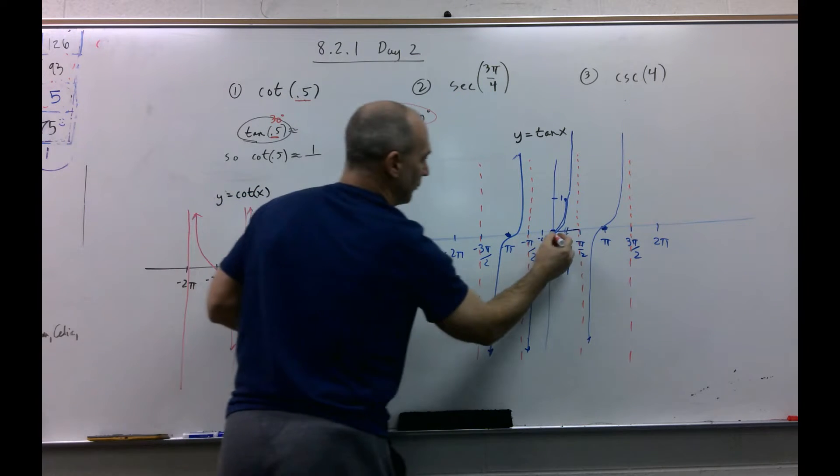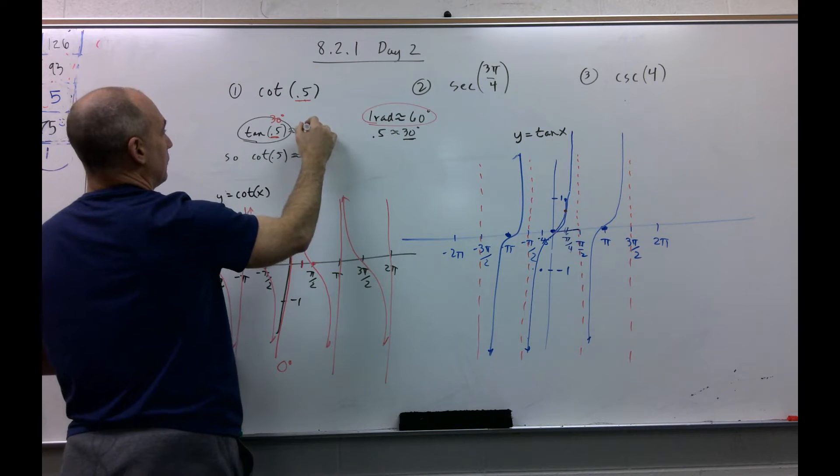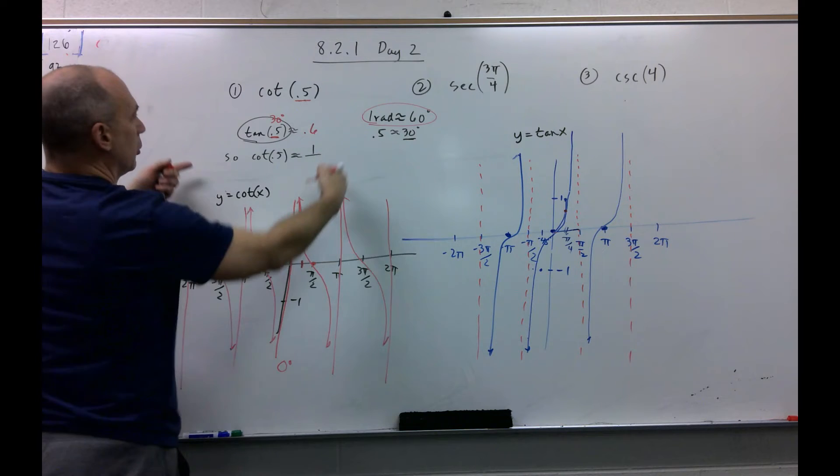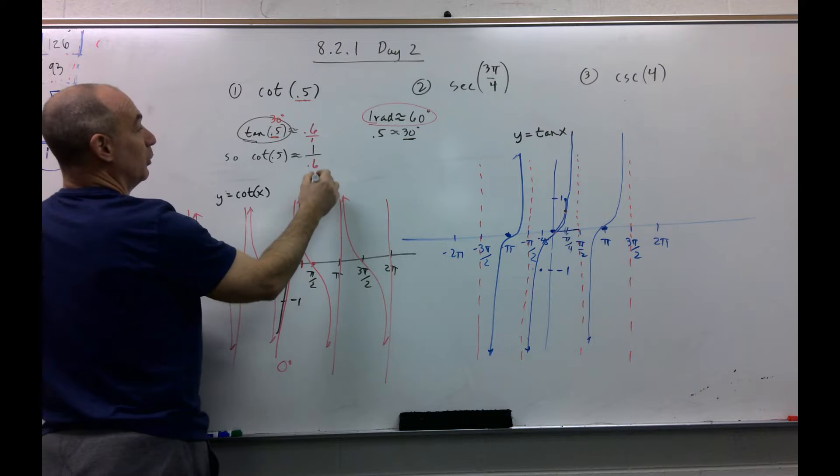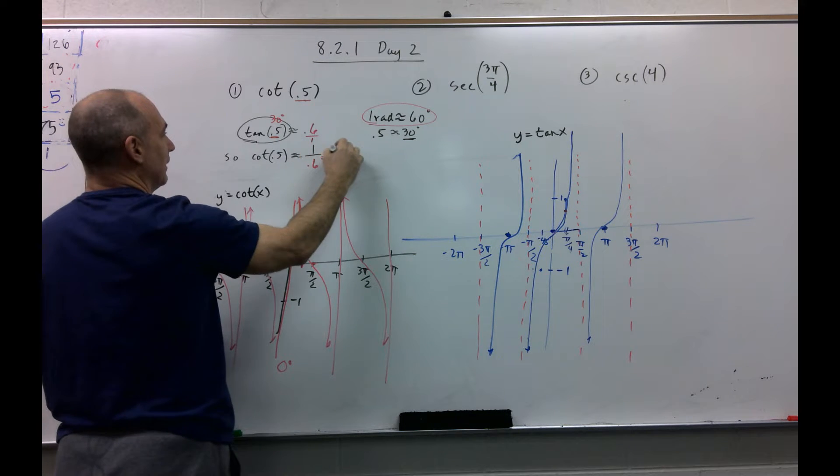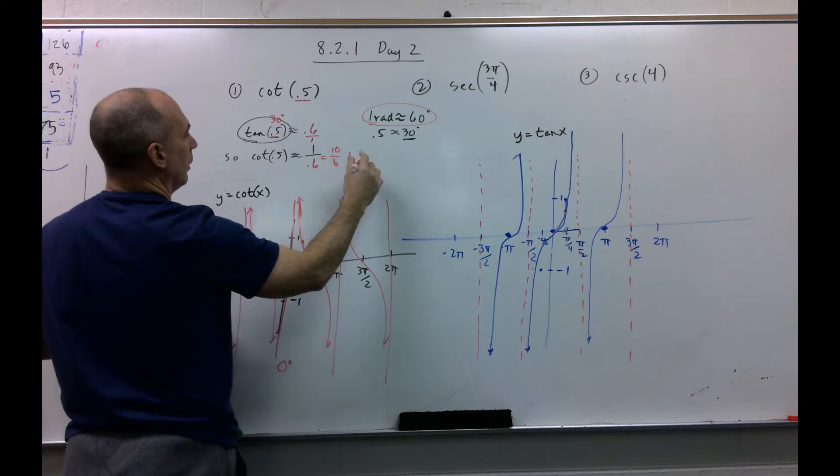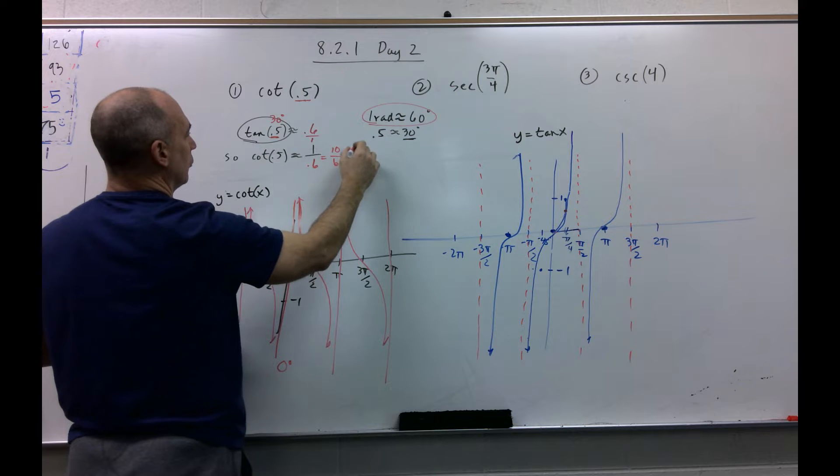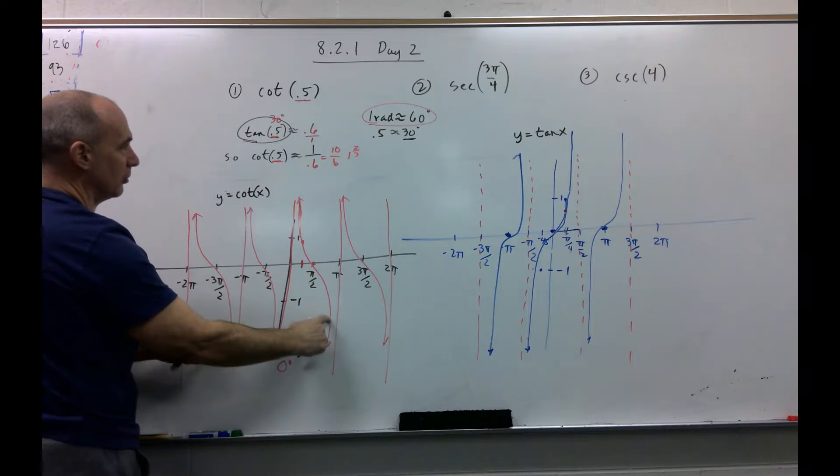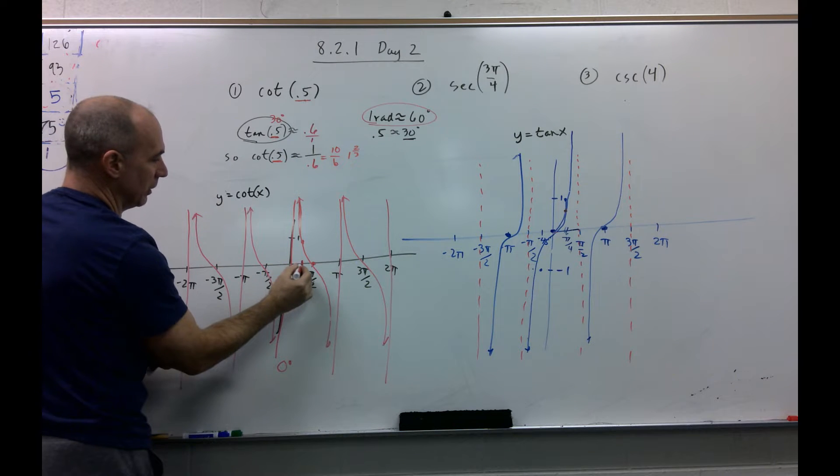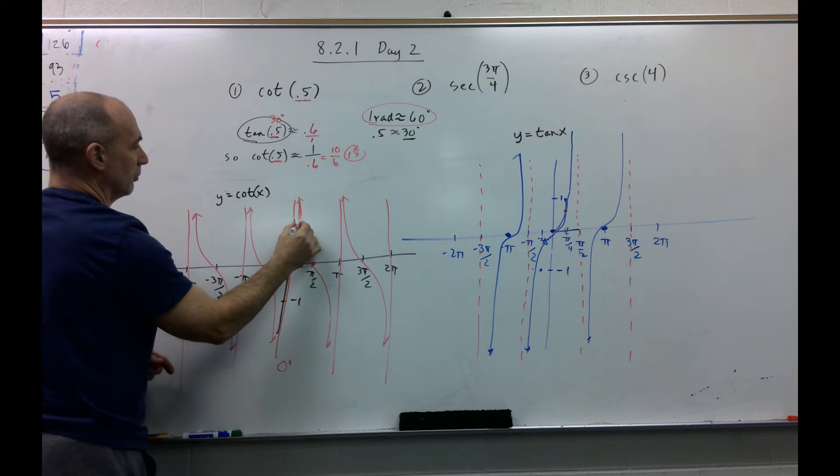So that means I have to go just shy of 45 and go up here, and I'm just guessing. I'm saying that's like 0.6. So the cotangent, instead of 0.6 over 1, is 1 over 0.6, which is 6 tenths. And if I flip that, I'd get 10 sixths, which is 1 and 2 thirds. It makes sense.